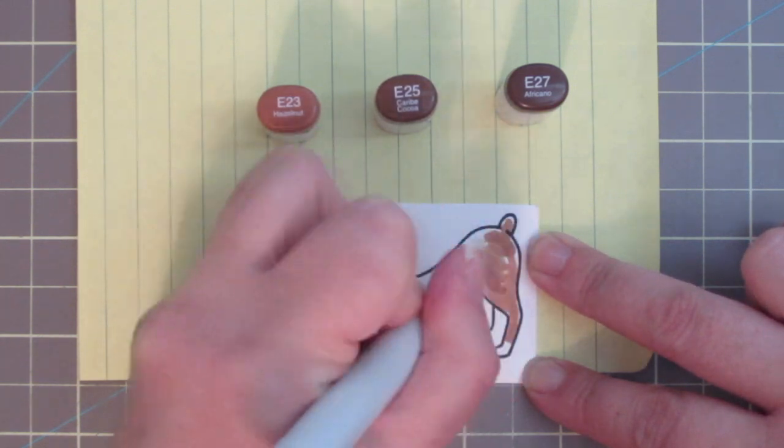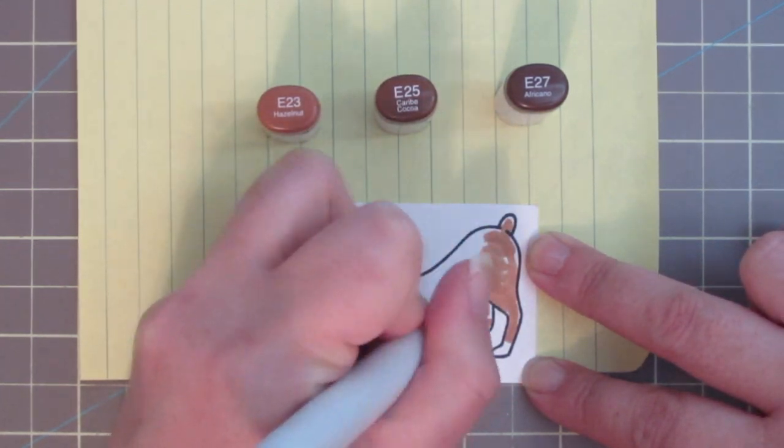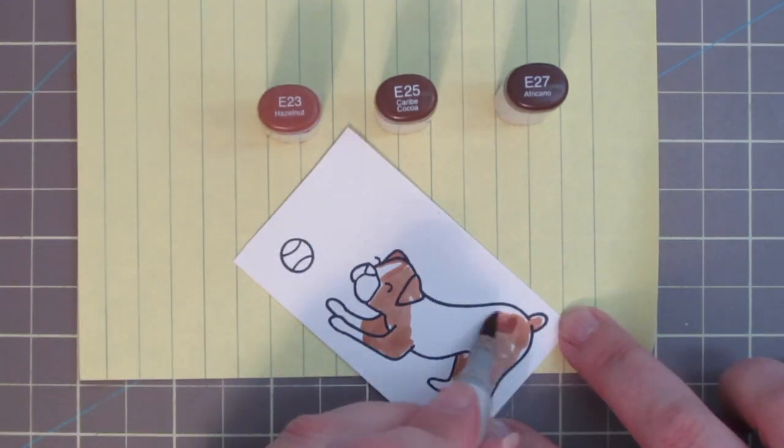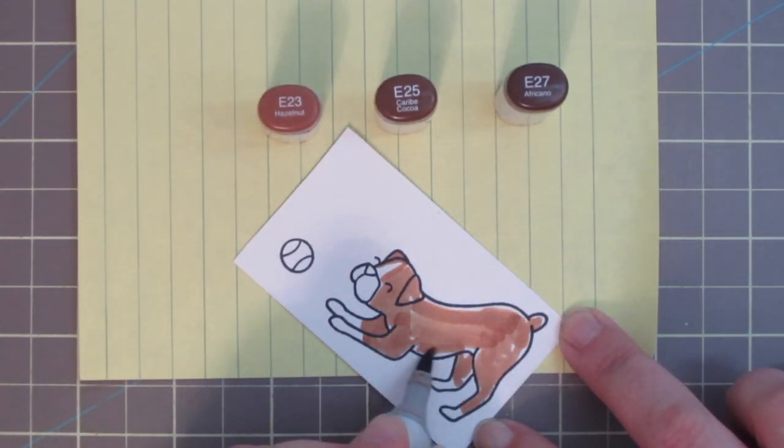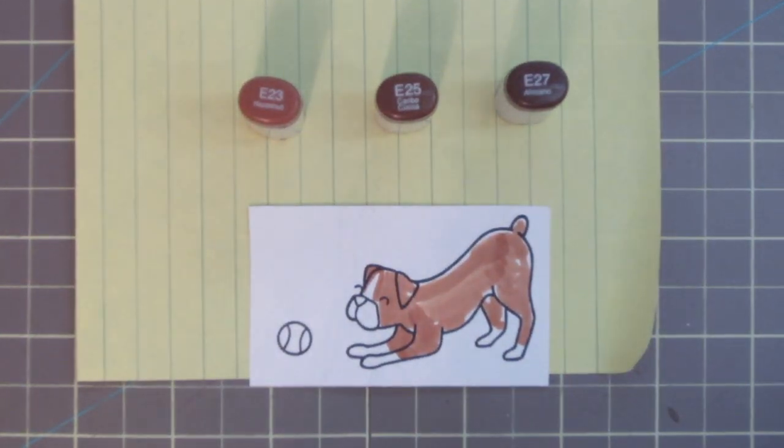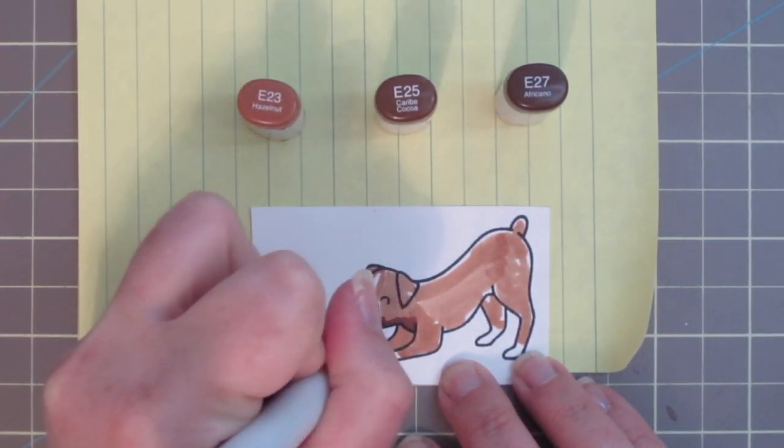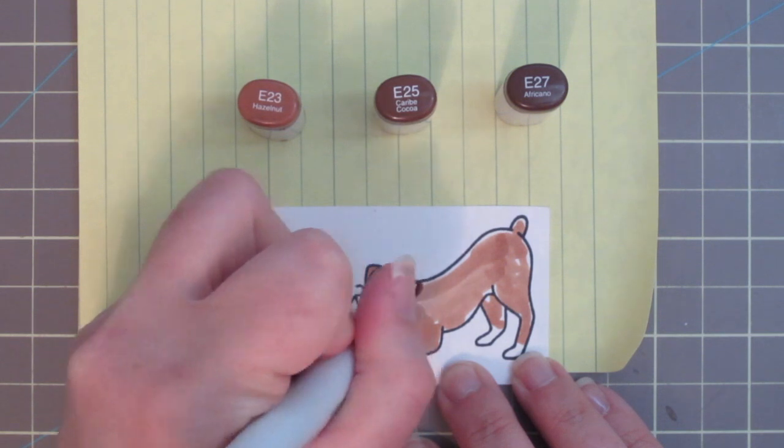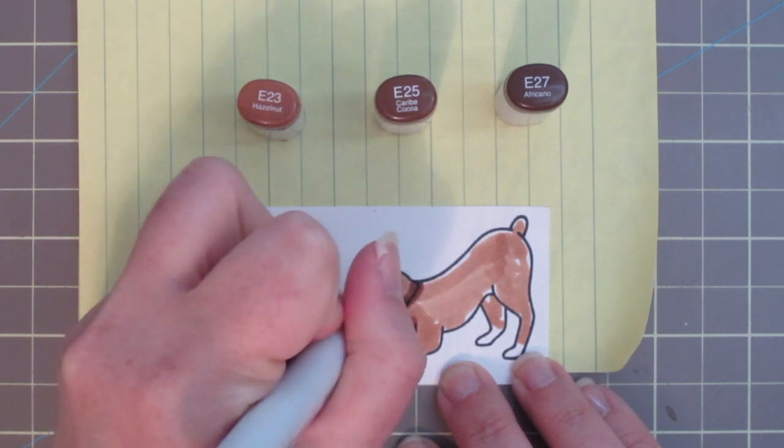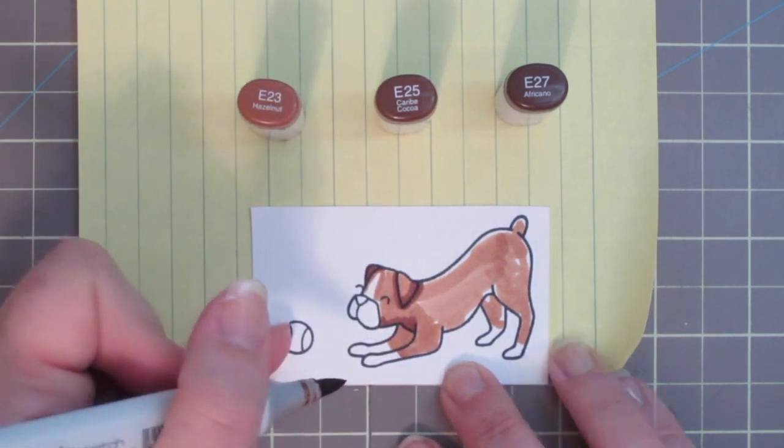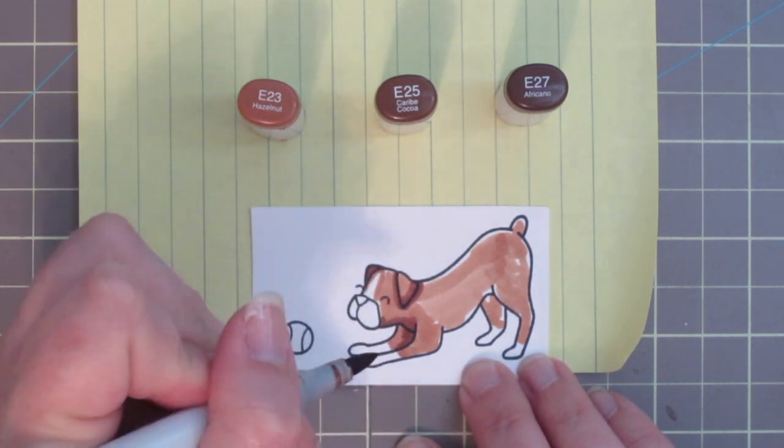I usually tend to do my coloring darkest to lightest when I'm coloring just a regular image, but in cases like this where I'm actually mapping out different colorings on a critter, I do usually go lightest to darkest so that I can correct any mistakes I make, or just kind of work slowly and build up the color so it doesn't get out of hand.